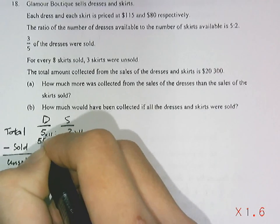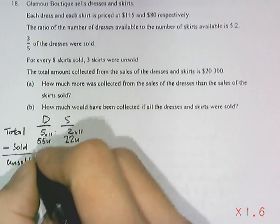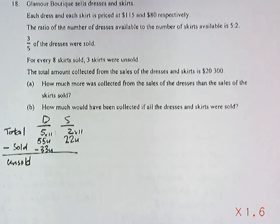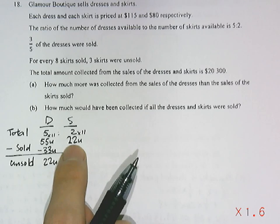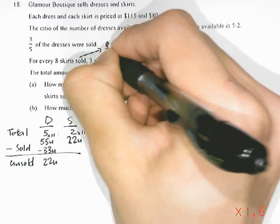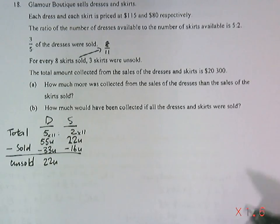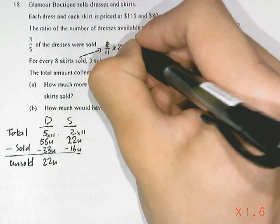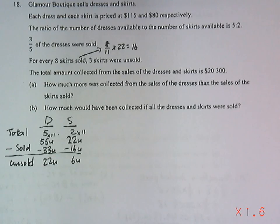With twenty-two skirts, we get fifty-five units of dresses. Three-fifths of the dresses were sold, so three-fifths of fifty-five gives thirty-three units sold, and twenty-two units of dresses remain unsold. For the twenty-two skirts, eight out of eleven were sold, so eight-elevenths of twenty-two equals sixteen units of skirts sold and six units unsold.